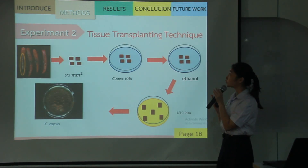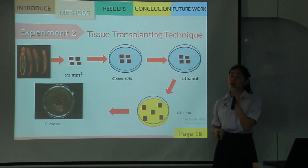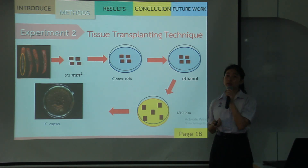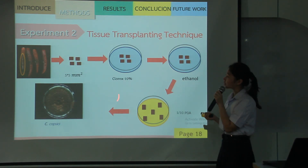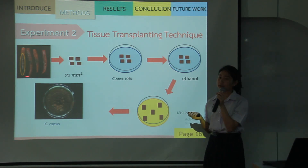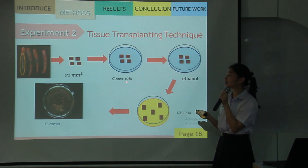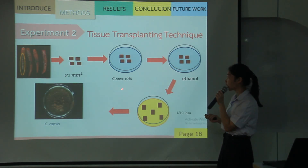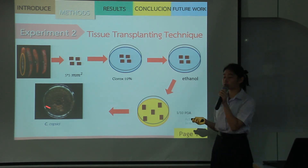Next is the tissue re-isolation technique. I perform this technique to confirm that the fungus re-isolated is the same fungus I originally used. First, cut the diseased area of 25 mm² and perform surface disinfection by 0.10% ethanol, then place on 10⁻⁴ dilution PDA, and I will verify by examining the morphology.